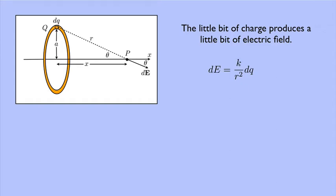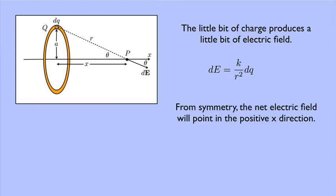And from symmetry, the net electric field will point in the positive x direction. If you imagine any point on the ring has a point on the opposite side of the ring that will cancel out the vertical components, so we'll only have something pointing along the positive x direction.